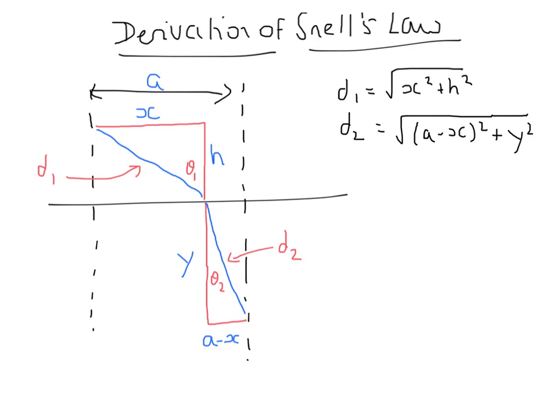We've got these two hypotenuses, d1 and d2. Using Pythagoras' equation we've got these equations here for d1 and d2.